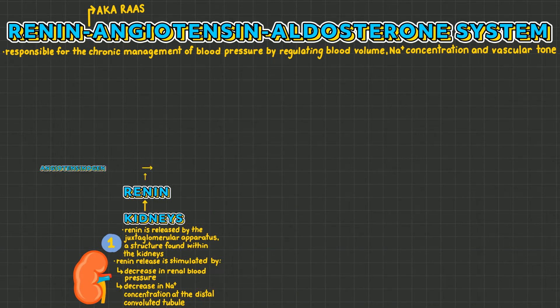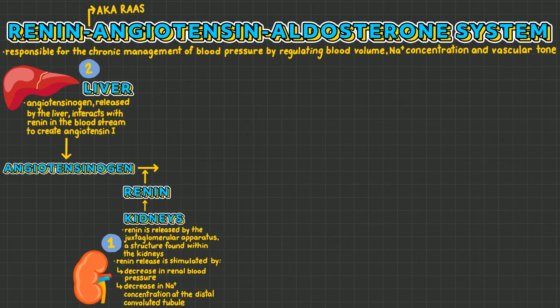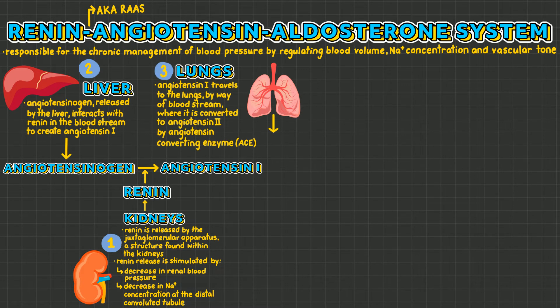Renin then interacts with angiotensinogen, released by the liver, to create angiotensin 1. Angiotensin 1 then travels to the lungs, where it is converted to angiotensin 2 by the angiotensin-converting enzyme, also known as ACE.